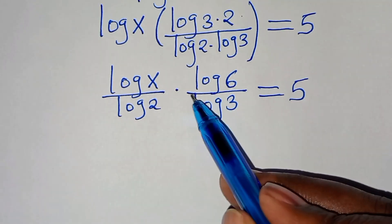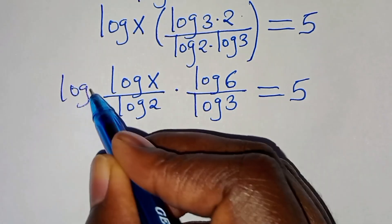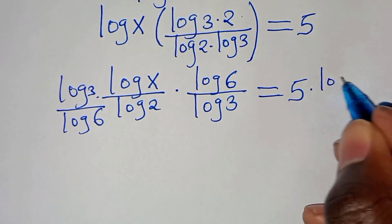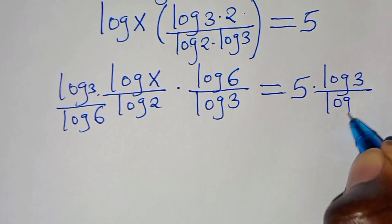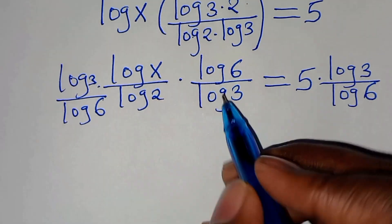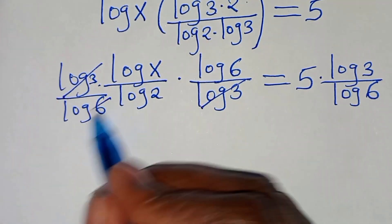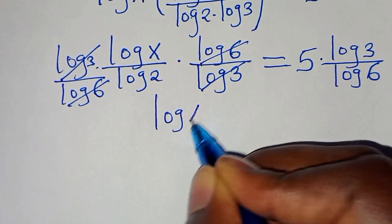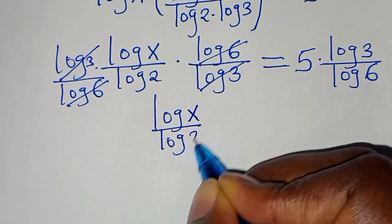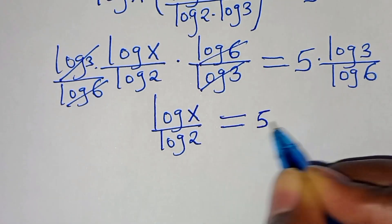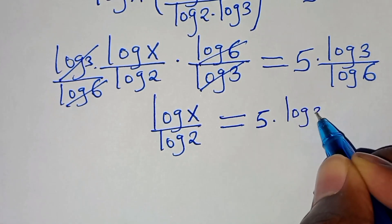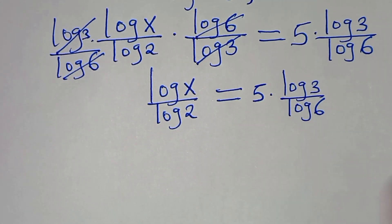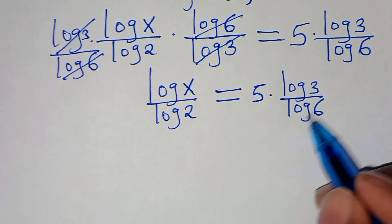We multiply both sides by log 3 divided by log 6. Simplifying log 3 and log 3, and log 6 and log 6, we get log x divided by log 2 equals 5 times log 3 divided by log 6. So log x over log 2 equals 5 · (log 3 / log 6), which is 5 · log base 6 of 3.